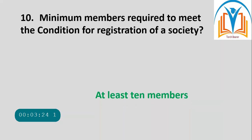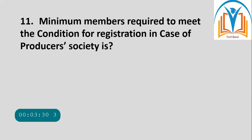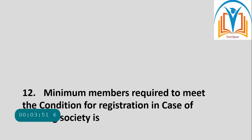At least 10 members are required to meet the conditions for registration of a society. Question number 11: Minimum members required for registration in case of producer societies — at least 50 members are required in case of producer societies registration.